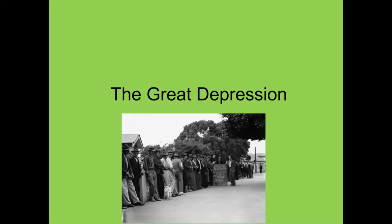You're going to be looking at the context of the Great Depression, which was an event in history at the time that Of Mice and Men was set and that it was written. What you need to do is make sure that you've got the phrase 'the Great Depression' written as your title, and don't forget your capital letters because it is the name of an idea or a concept. Make sure you've got that written down.